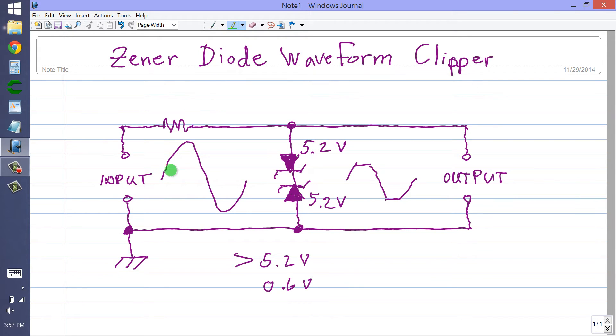Now, let's suppose that you have an input waveform like this, a sine wave. And let's suppose that the peaks are plus or minus 12 volts. That means that the peak-to-peak voltage is 24 volts. It goes through this resistor, which is there in order to keep too much current from flowing through these diodes and destroying them.